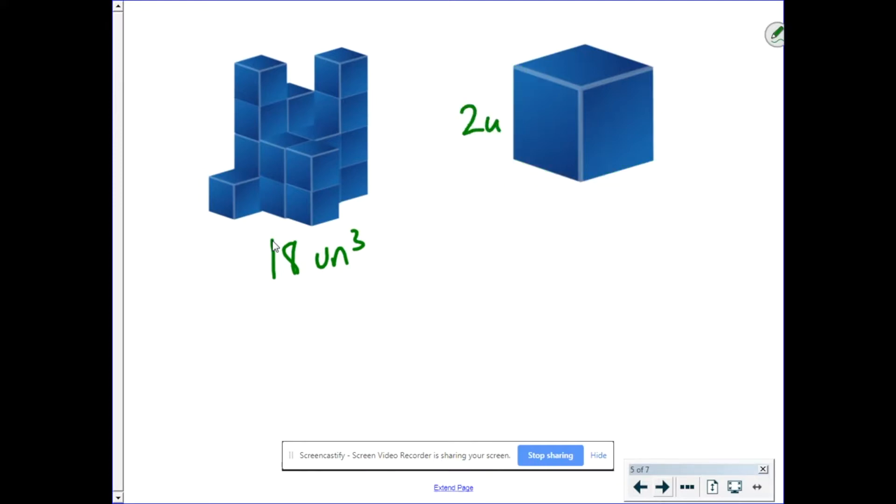So what I have my students do is I have them find the volume of one of the cubes. So this cube right here is two by two by two, or eight cubic units. And then I multiply it by how many cubes I have. Well, luckily, I've already counted. So I have 18. So I multiply 18 times eight cubic units. Eight times one is eight, and so it's 144. So the actual volume when I changed my side lengths is 144 cubic units.